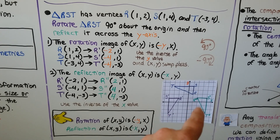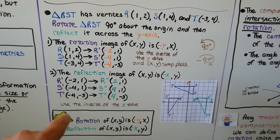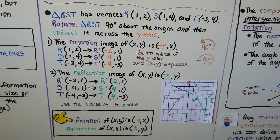To summarize: the rotation of (x, y) gives (−y, x), and the reflection of (x, y) across the y-axis gives (−x, y).